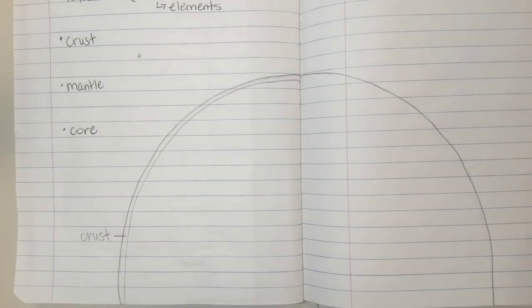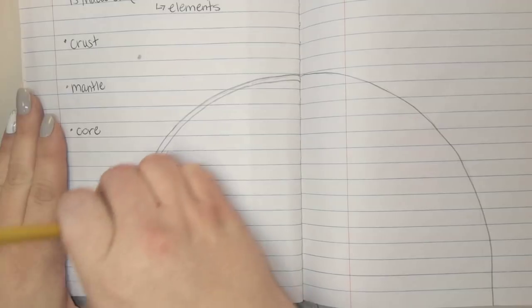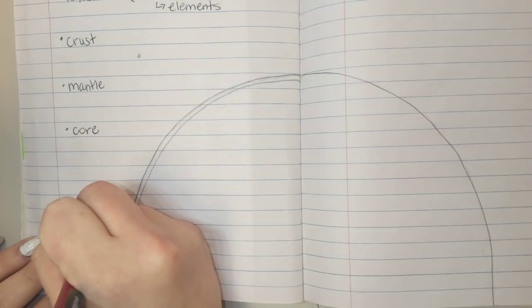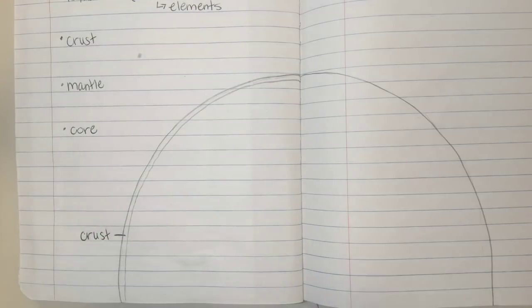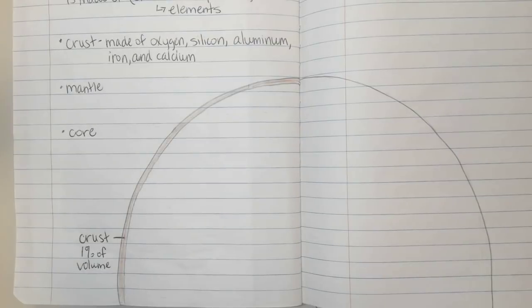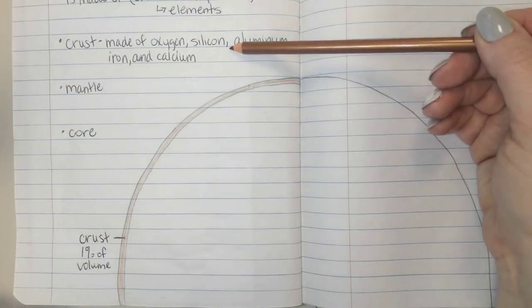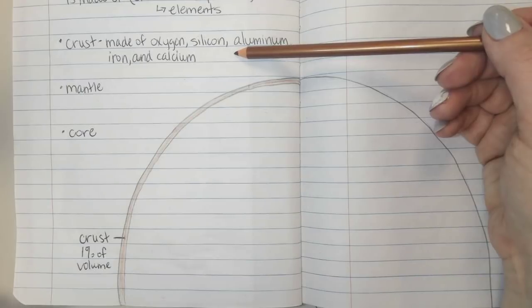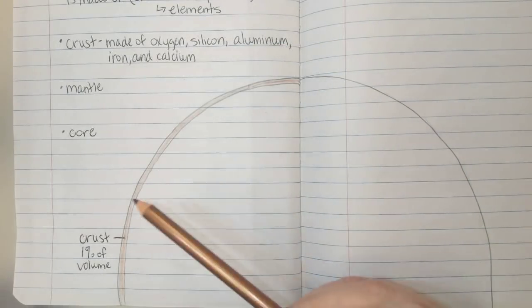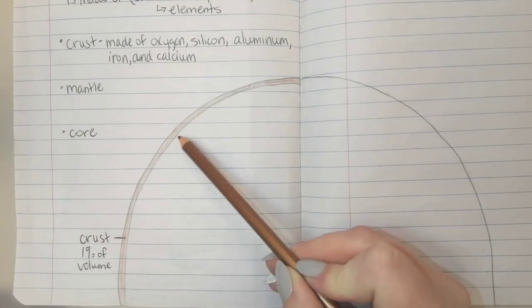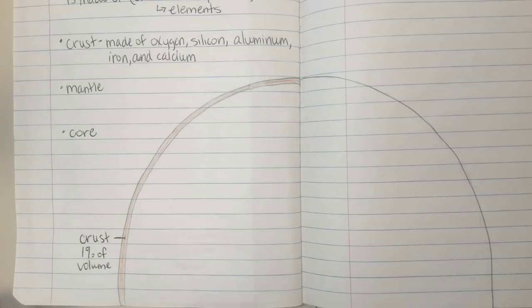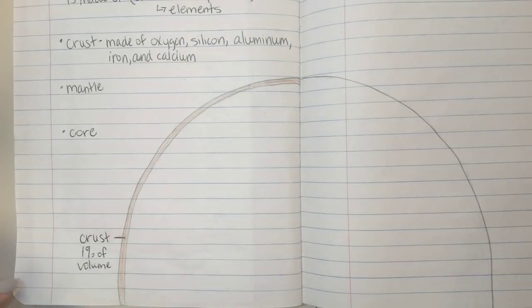I think there was a little bit of a mess up in the video. So if you haven't gotten this written down, it's made of oxygen, silicon, aluminum, iron, and calcium. I went ahead and colored in using brown to color the crust just to give us a better visual. The crust is 1% of the volume of the Earth, so it is a very small portion of the Earth as far as the volume.